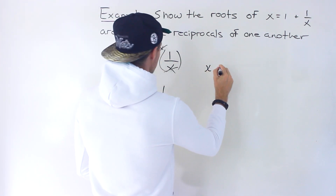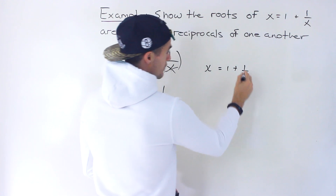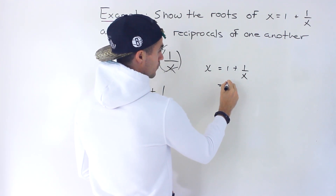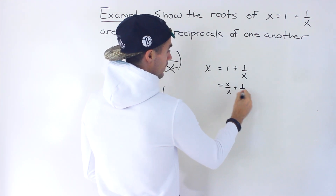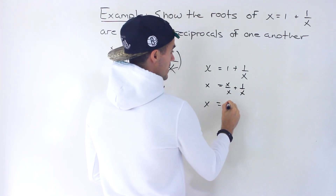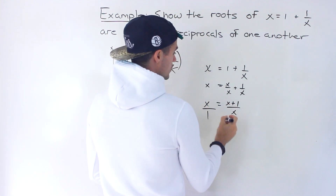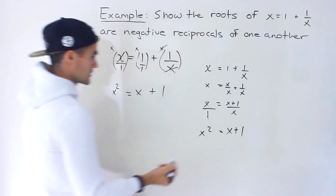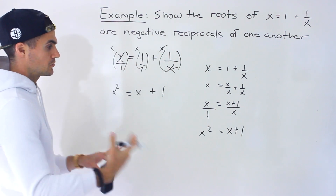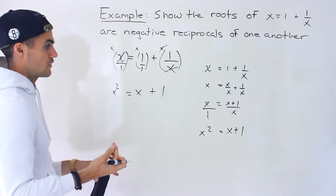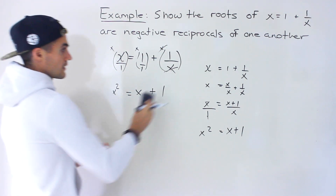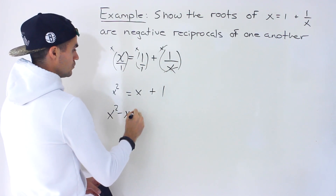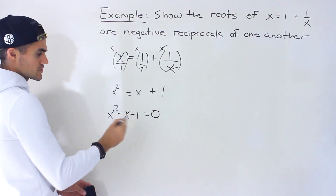Another way is to combine the right side into one fraction. Write the 1 as x over x to get a common denominator, giving x equals x plus 1 over x, then cross multiply: x times x is x squared, and 1 times x plus 1 gives x plus 1. Multiple ways to get rid of the fractions — whichever way you do it, you end up with the same result. This is now just a quadratic equation, so we bring everything over to one side.